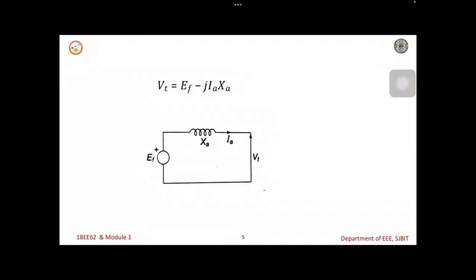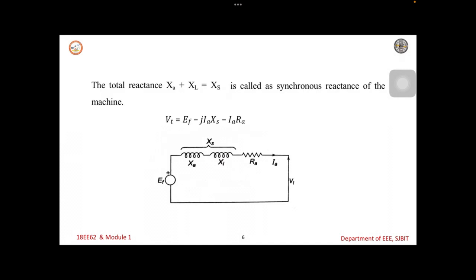This is the equivalent circuit of the equation which is shown here. That is EF is equal to IA Ra plus Vt. The effect of armature resistance and leakage reactance is included to give the complete circuit model of synchronous generator. Here the XA is the armature reactance and the leakage reactance will be the synchronous reactance. Let us consider these two reactances, that is XA and XL put together is the synchronous reactance.